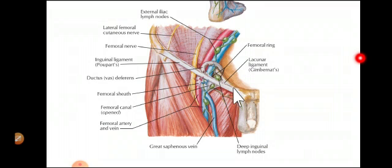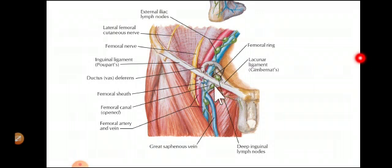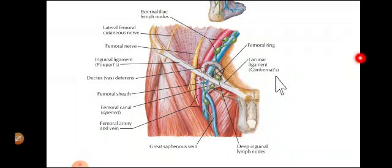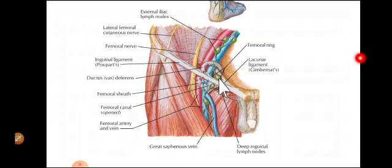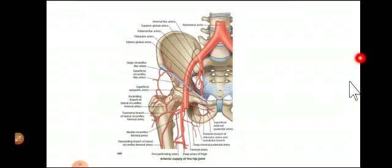To summarize the alternate names: the inguinal ligament is also called Poupart's ligament, the lacunar ligament is also called Gimbernat's ligament, and the pectineal ligament is also called the ligament of Cooper. These are the three ligaments we have discussed.